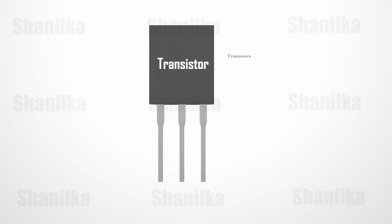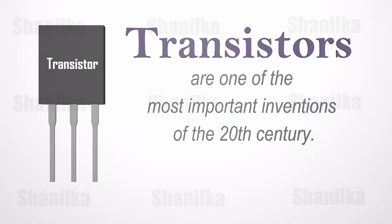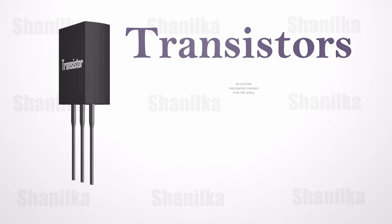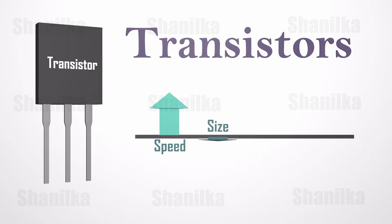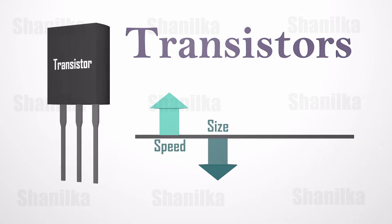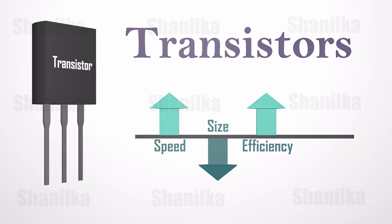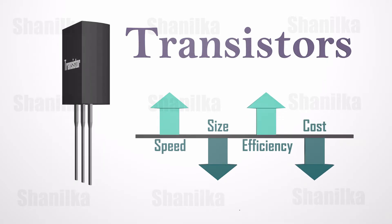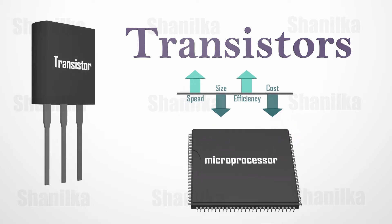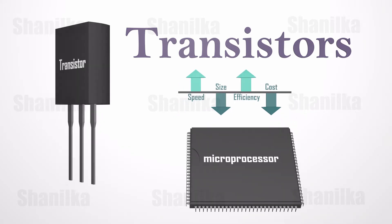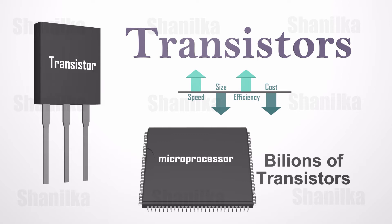Transistors are one of the most important inventions of the 20th century. Because of transistors, we are able to build much faster, much smaller, and very energy-efficient controller circuits at a very low cost. Your computer or mobile phone consists of microprocessors and ICs, which contain billions of transistors.